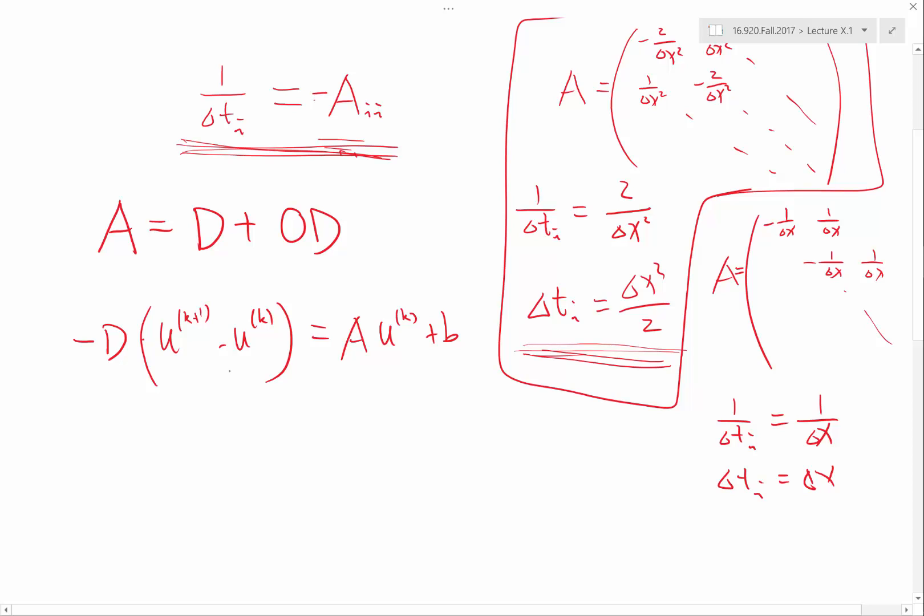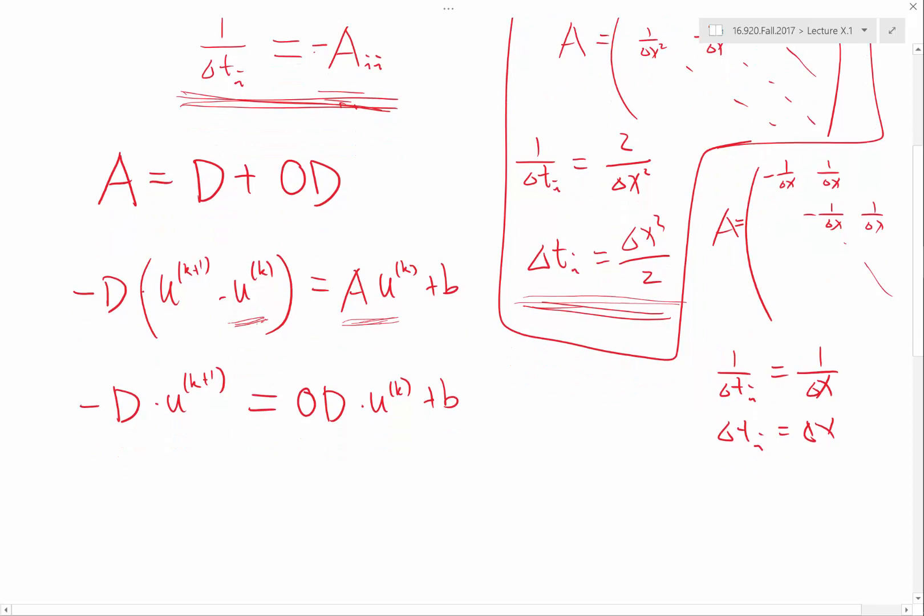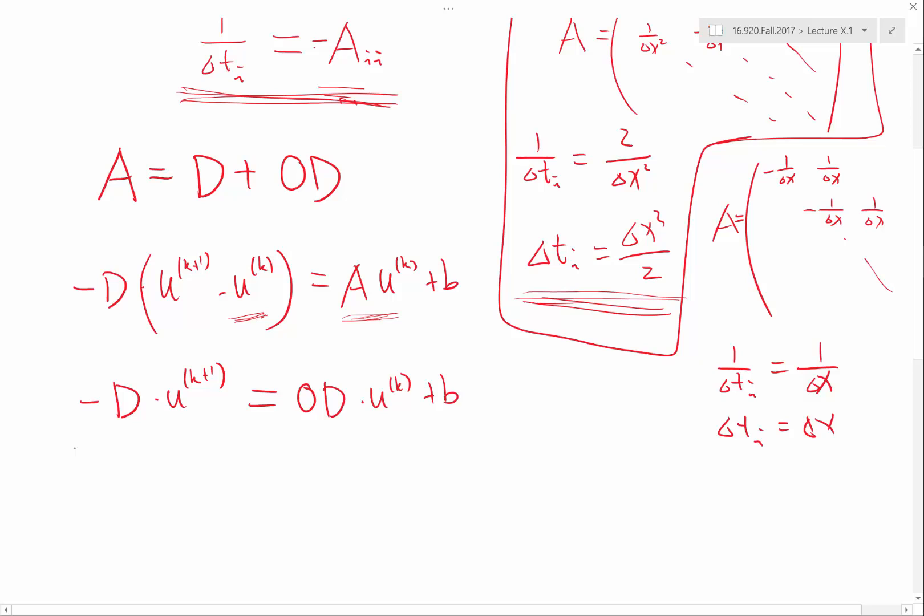And just to look at this entry, this part, it actually cancels the diagonal part on the right-hand side. So the system becomes d times u k plus 1 equal to od times u k plus b. And this is Jacobi iteration.